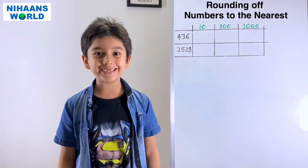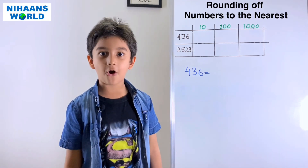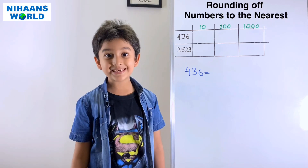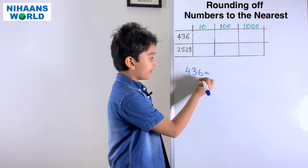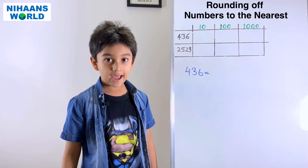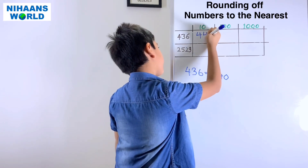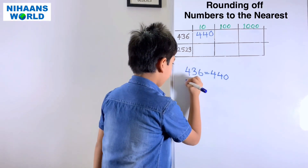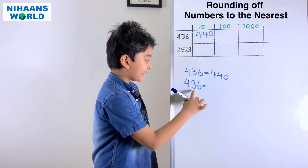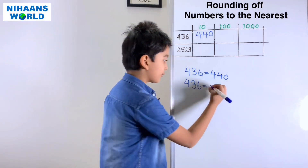Friends, let's solve some more examples. 436. For nearest tens, we check the ones place — 6 is a strong number, so it gives 1 to the tens digit: 3 plus 1 equals 4, and 6 becomes 0. So 436 rounded to the nearest ten is 440. For nearest hundreds, we check the tens place — 3 is a weak number, so it gives nothing to 4; 3 and 6 become 0. So 436 rounded to the nearest hundred is 400.